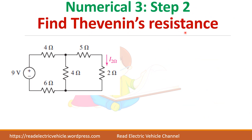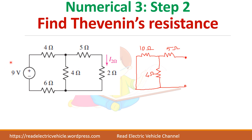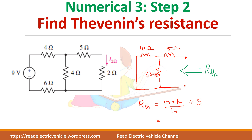Now let us find the Thevenin resistance. Short circuit the voltage source. Always come from the opposite side. 10 and 4 are in parallel, then add this resistance. So Rth is 7.85 ohms.